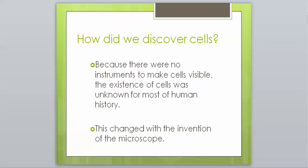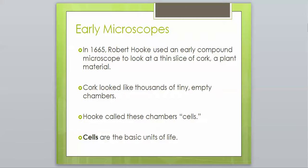We can look at things in a whole new way with the microscope. The first person to use that microscope to look at cells was a guy by the name of Robert Hooke. Robert Hooke, that is an important person to remember. He used an early compound microscope to look at a thin slice of cork, a plant material.